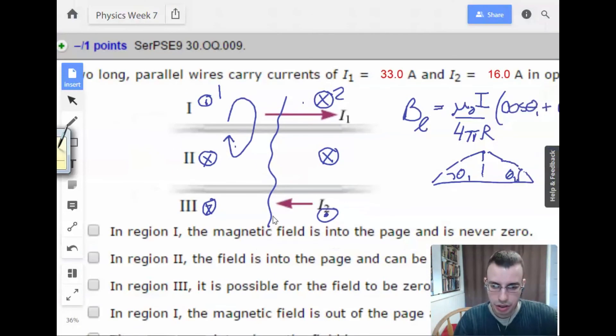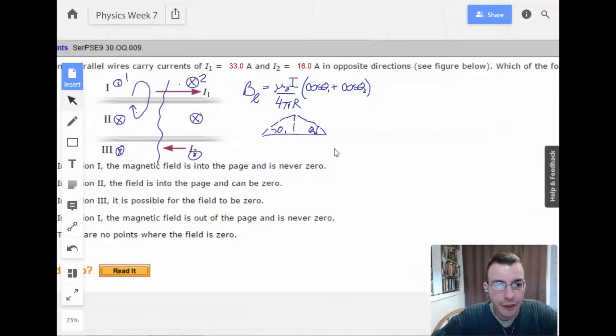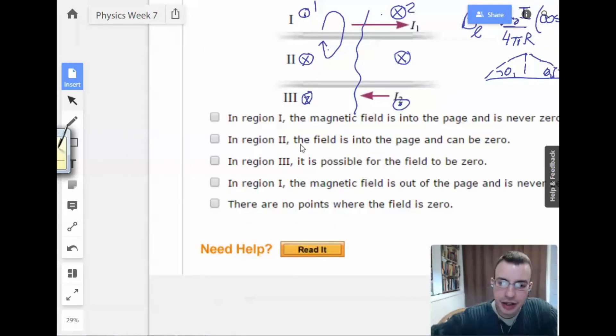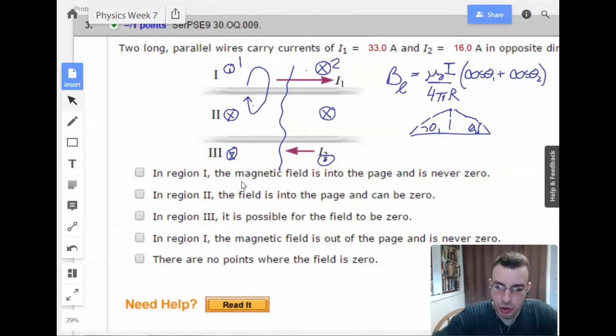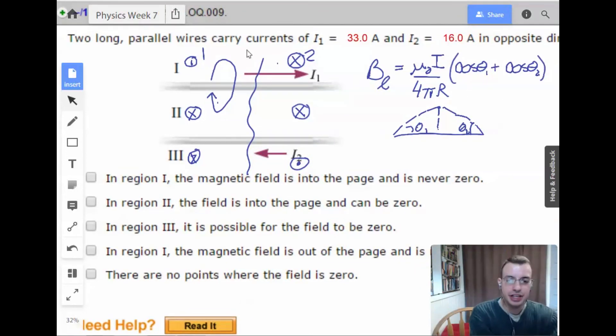So, and we know that I1 is stronger than I2. So in region one, the magnetic field, which of the following must be true? So I1 is going to dominate region one. The reason because is the two factors that matter is the distance and the current. So I1 is both closer to region one and has a stronger current.